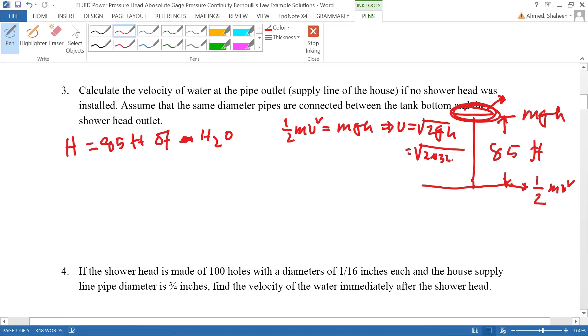Now, if you plug all this number here, 2 times 32.2 times h is 85. So I got this in my calculation. What is that? 74 feet per second. 74 feet per second.